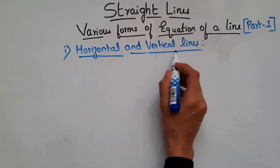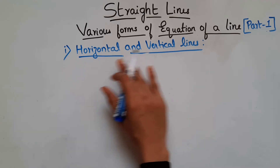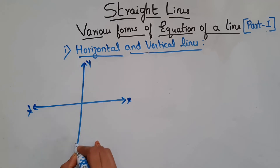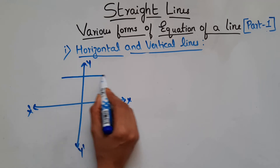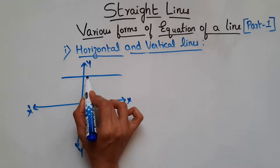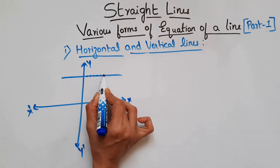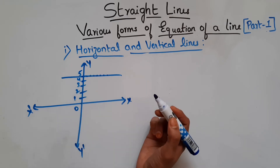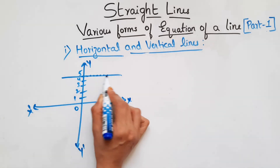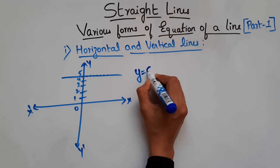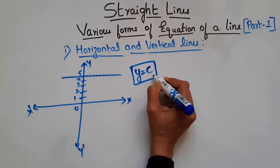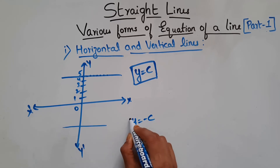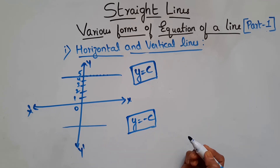Let's see the first one — when we have a horizontal or vertical line. For a horizontal line, which is parallel to the x-axis, every point on the line has a constant y-value. So throughout this line, y equals a constant. If the line is in the negative axis, then y = −c. The sign depends on the position of the line. So this is the equation for a horizontal line.